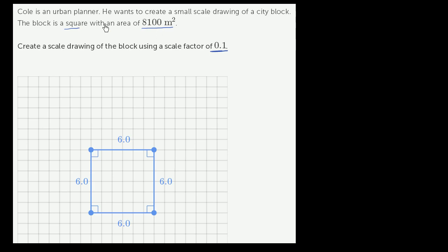The first thing we could think about - they give us the area of the block, and it's a square block, so it has the same length and width. We could use that information to figure out the length and width of that block.